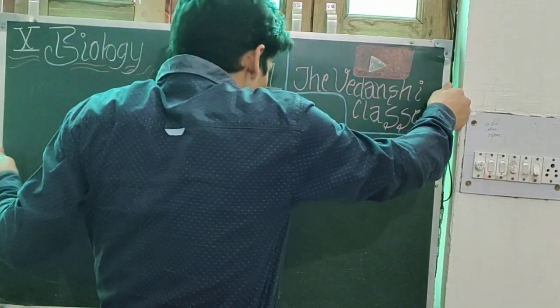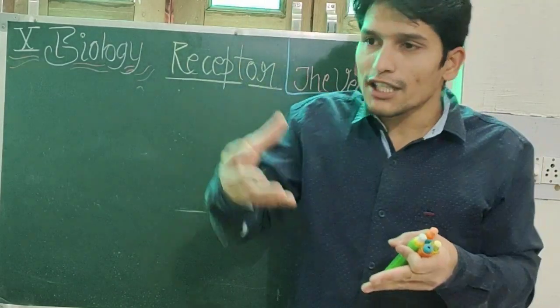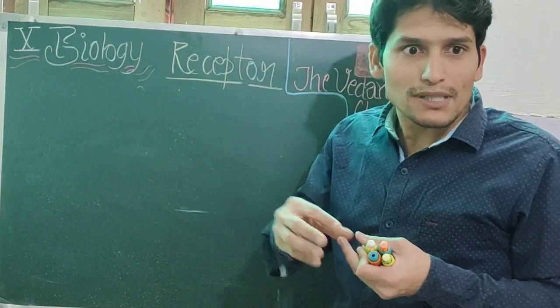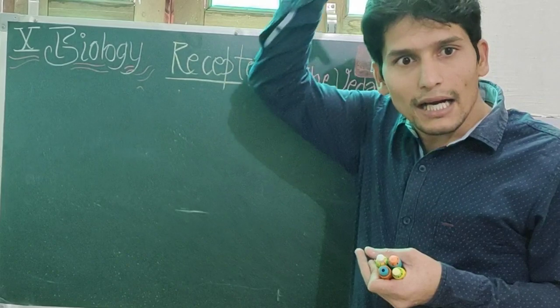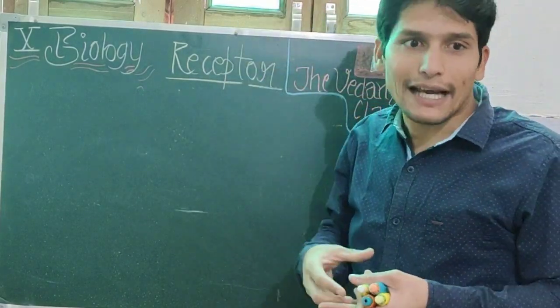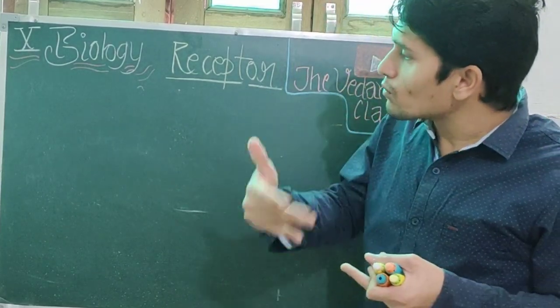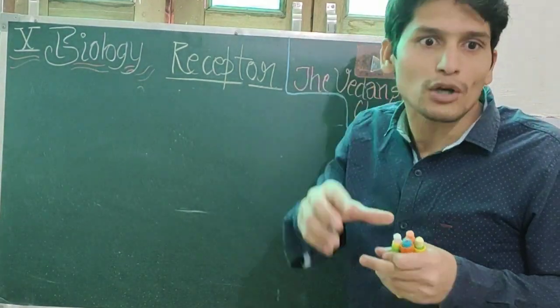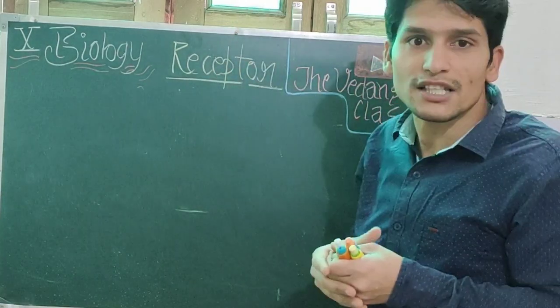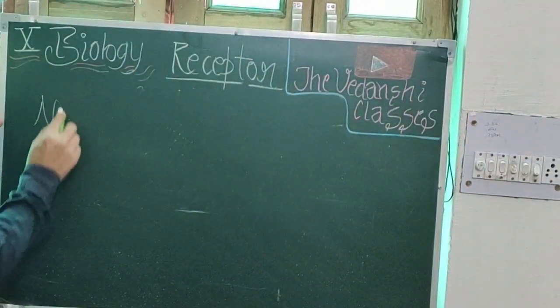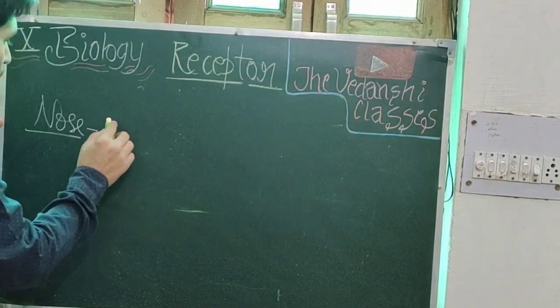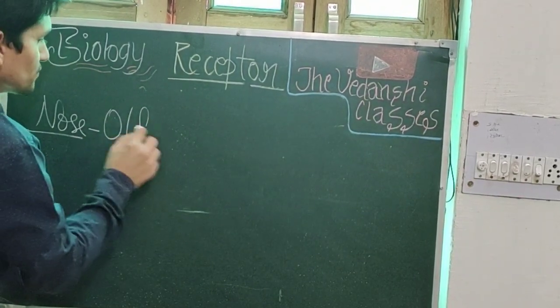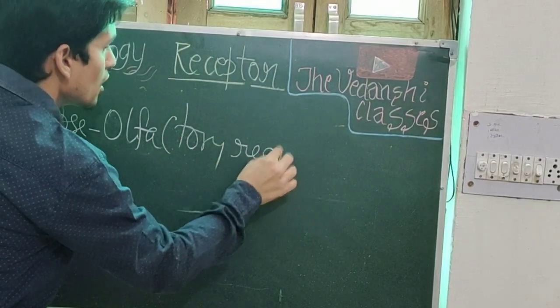For example, suppose we are in the forest. Through our eyes, light receptors or photoreceptors send signals to the brain. The brain then orders a gland called the adrenal gland, which releases the hormone adrenaline.